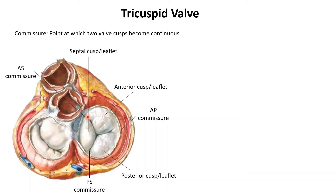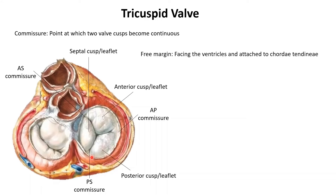Now notice how each cusp has a free margin and an attached margin. This is the free margin of the anterior cusp and this is the attached margin or the base of the anterior cusp. Likewise this is the free margin of the posterior cusp and this is the base or the attached margin of the posterior cusp.